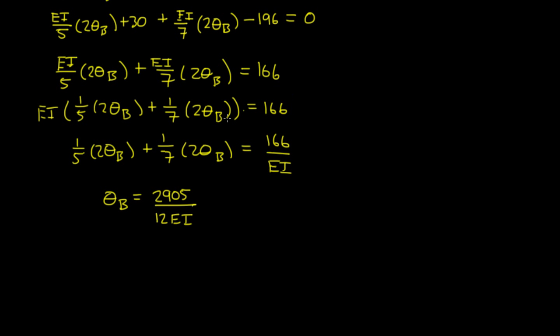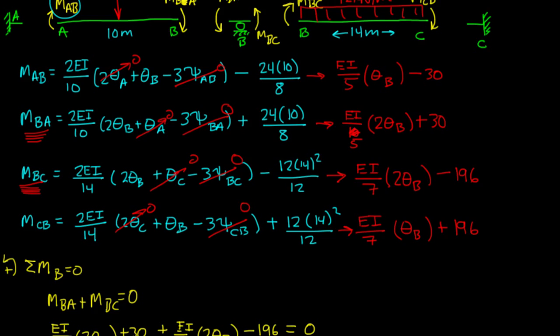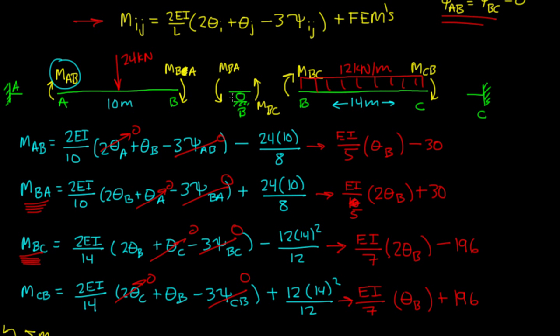Alright, welcome back. In the last video we figured out what theta b was by taking the sum of moments around point b, joint b, and setting that equal to zero because joint b needs to be in equilibrium right here.